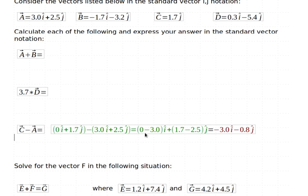And so when you do that math, the 0 minus 3.0 is going to give you minus 3.0 i hat. And the 1.7 minus 2.5 is going to give you minus 0.8 j hat.